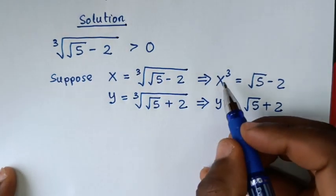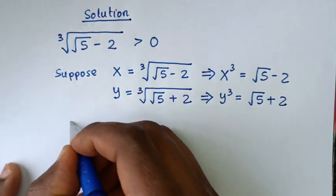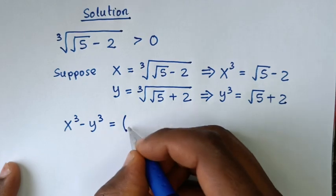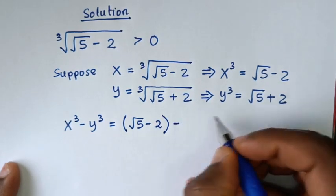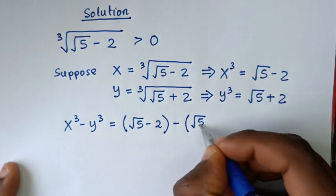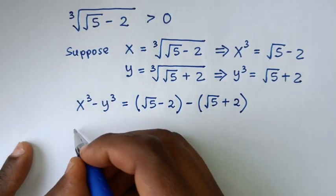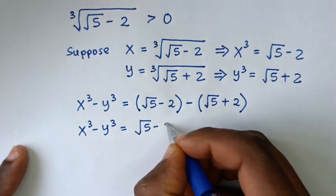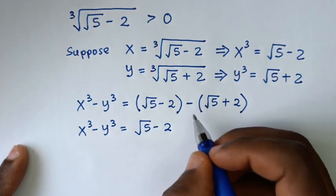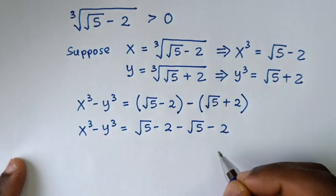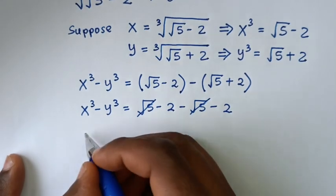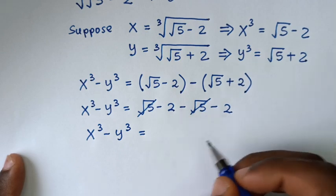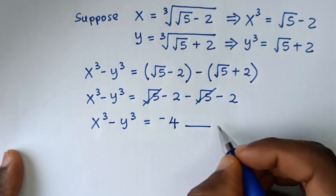In the next step, we'll take x³ minus y³. So x³ minus y³ equals (√5 − 2) − (√5 + 2). Opening the brackets, the √5 terms cancel, leaving minus 2 minus 2, which equals minus 4. We'll call this equation 1.